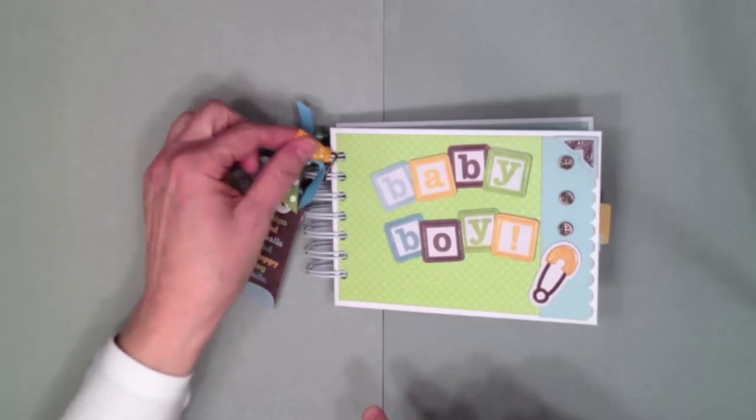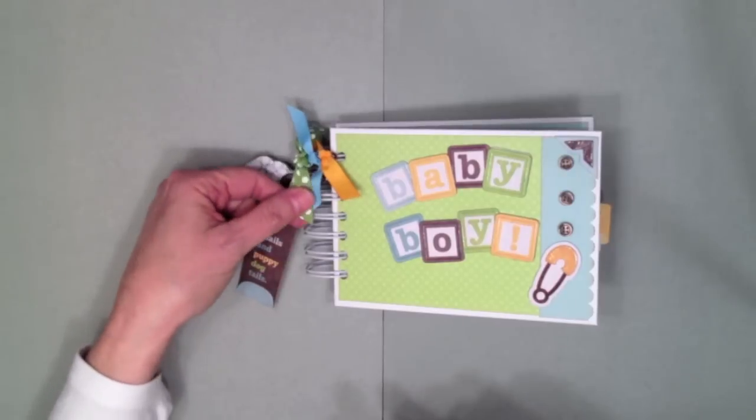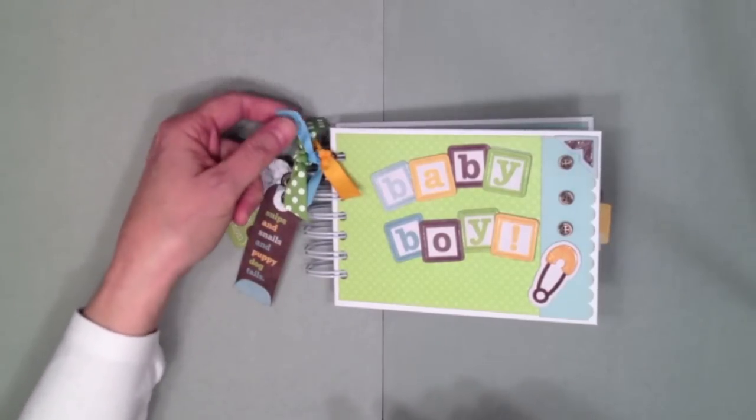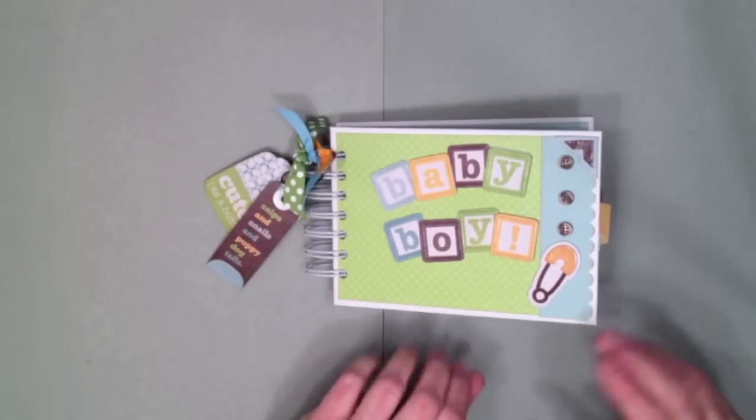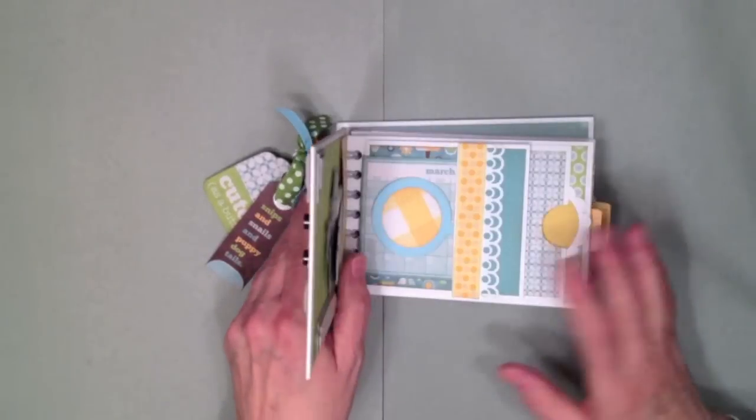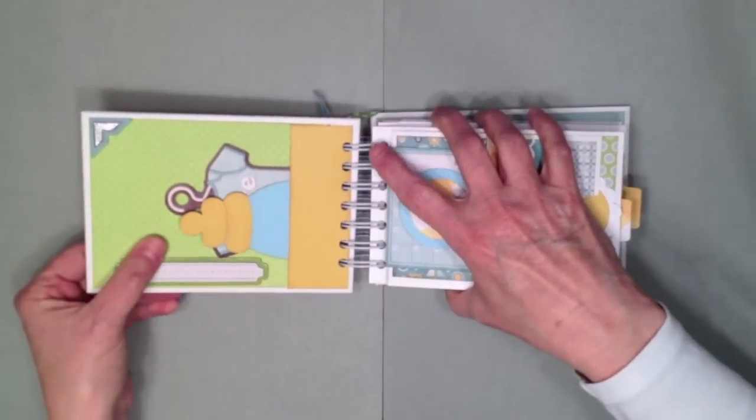I did that with the other one as well, Snips and Snails and Puppy Dog Tails. I put some little ribbon trim on the front just a few because it is a little boy album. I have some gold and some blue and some green Bazzill Bunny Double Dot ribbon.